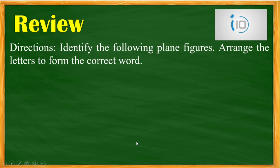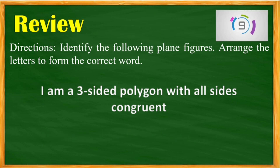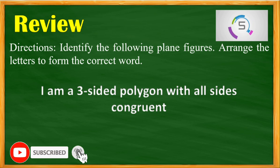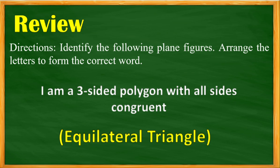So let's have some review first. We are going to identify the following plane figures and arrange the letters to form the correct word. I am a 3-sided polygon with all sides congruent. You have 10 seconds to identify the hidden word. Your timer starts now. Time's up. The correct answer is equilateral triangle.